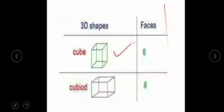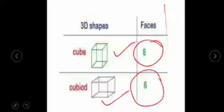Here two shapes are given, cube and cuboid. Number of faces in cube are six and in cuboid also six.